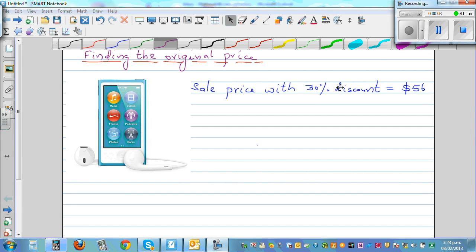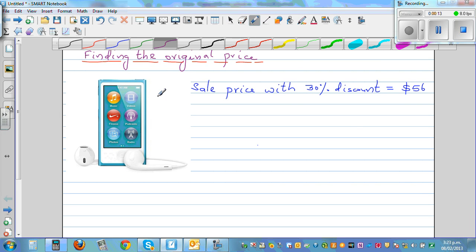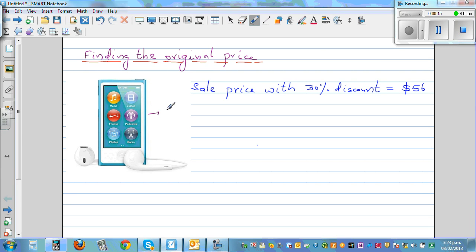We want to find the original price of this iPod. What does it say? The sale price with a 30% discount is $56. So this is an iPod which is selling at $56. And what we are told is there is a 30% discount on it.